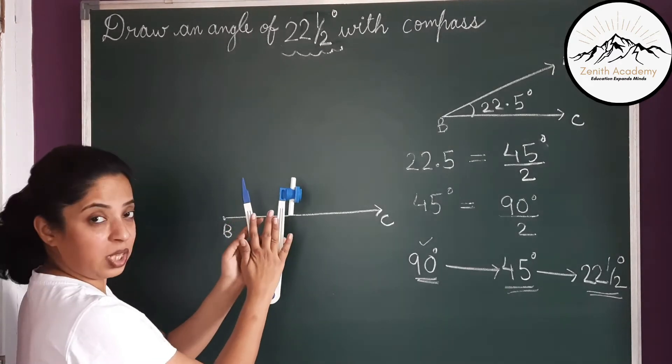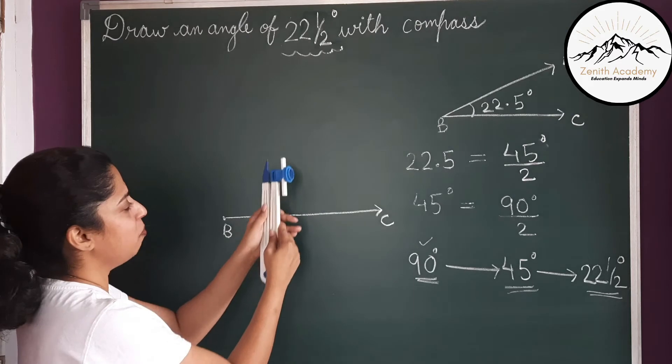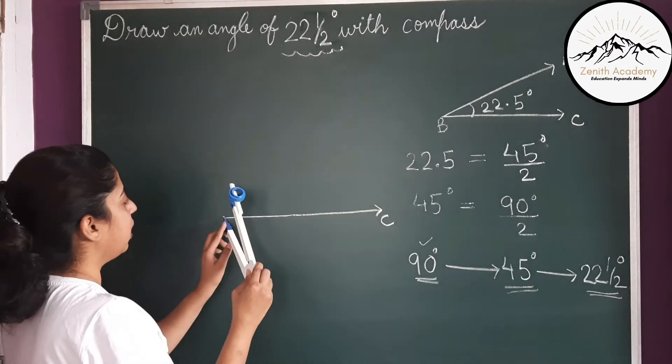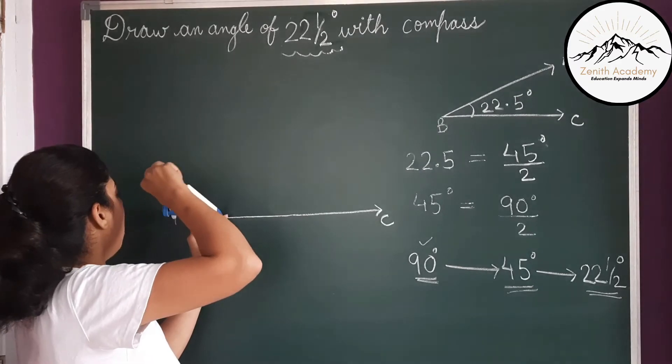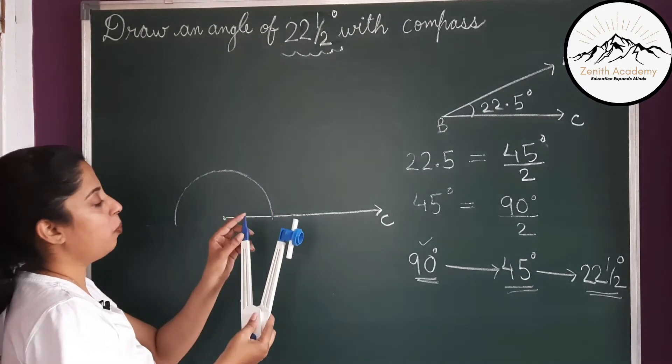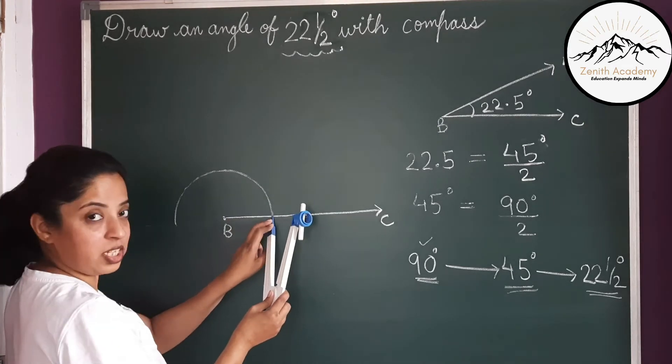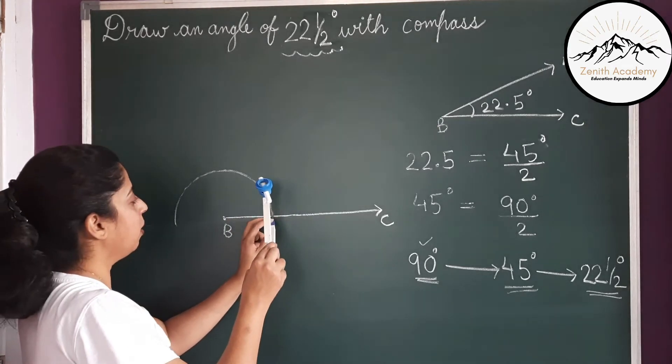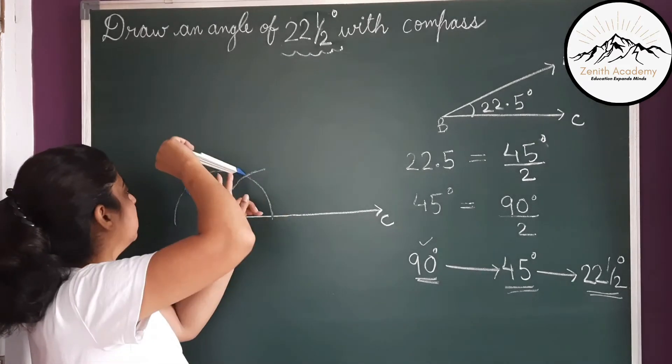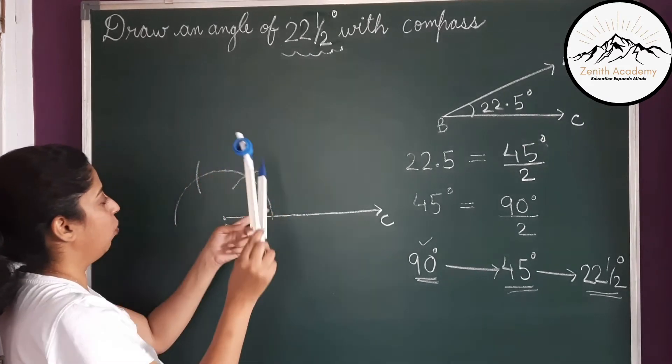Just open the compass to any measure. You can simply open it like this. Then keep your pointer at B and draw an arc. Now keep your pointer at this point where this arc is touching the ray and draw an arc. This is 60 degree. This is again one more 60, so 120.